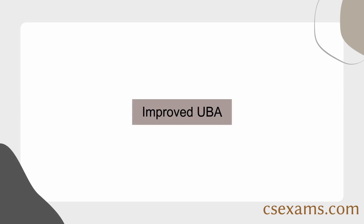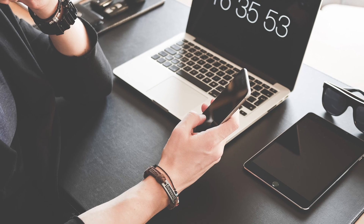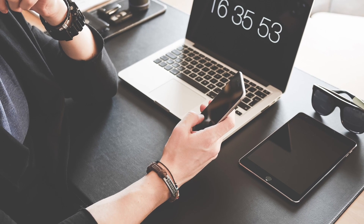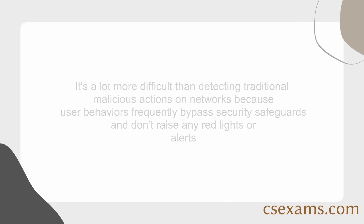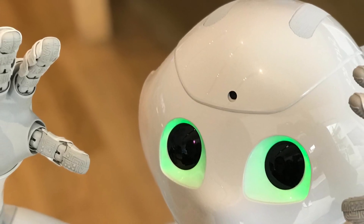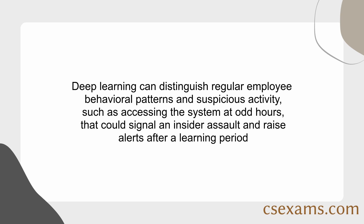User Behavior Analytics (UBA) is the process of analyzing user behavior in order to detect and prevent security threats, and it is a critical part of any organization's cybersecurity strategy. It is more difficult than detecting traditional malicious actions on networks because user behaviors frequently bypass security safeguards and don't raise any alerts. Deep learning can distinguish regular employee behavioral patterns from suspicious activity — such as accessing the system at unusual hours — which could signal an insider assault, raising alerts after a learning period.